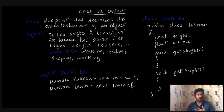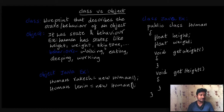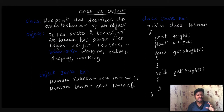If you want one object, then you create one object. What is the object? It is defined by state and behavior. For a human, the state includes height, weight, and skin tone. The behavior includes work, eat, sleep, etc. So the entity with state and behavior is the object.